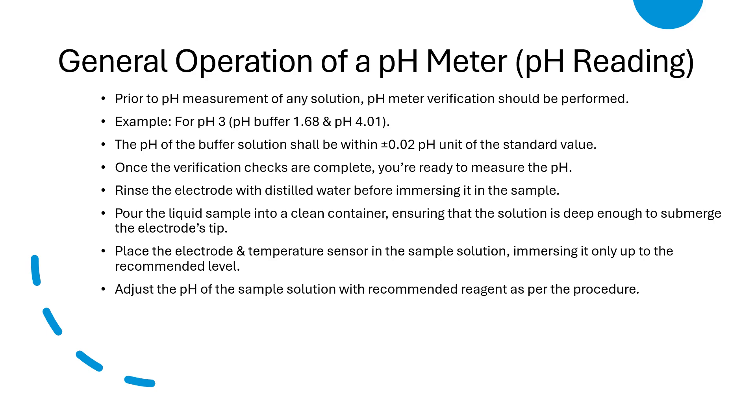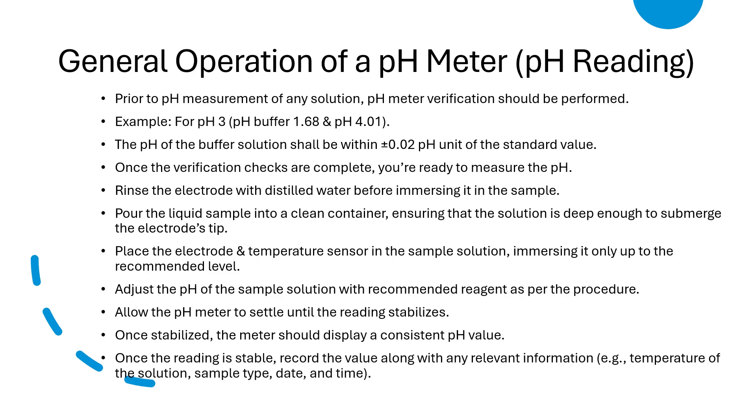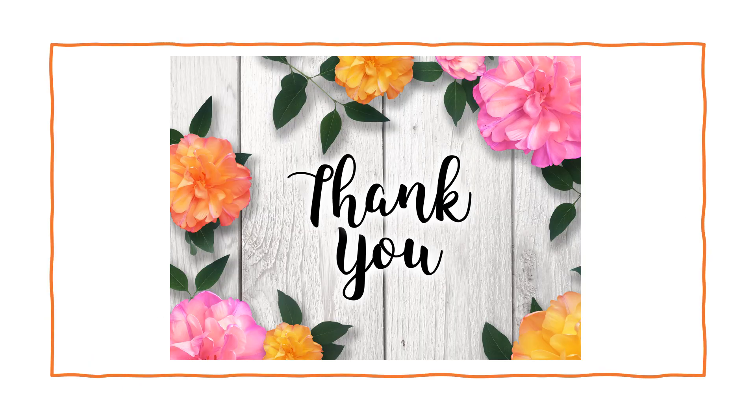Adjust the pH of the sample solution with the recommended reagent as per the procedure. Now allow the pH meter to settle until the reading is stabilized. Once stabilized, the pH meter should display a consistent pH value. Once the reading is stable, record the value along with any relevant information: temperature of the solution, sample type, date, and time. Friends, this is all about the general overview of the pH meter instrument.